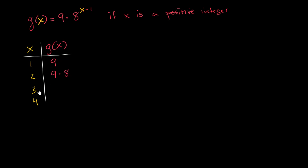Then when x is equal to 3, this is going to be 3 minus 1 is 2, so it's going to be 8 squared. So it's going to be 9 times 8 squared, which we could write as 9 times 8 times 8.